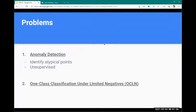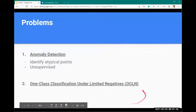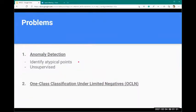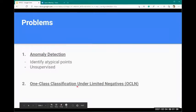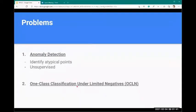The first is unsupervised anomaly detection, where we identify atypical points. The second is one-class classification under limited negatives, where limited negatives refer to normal data and positive is an outlier. When we have limited normal data and must classify between normal and anomalous, negative is normal data, positive class means outliers.